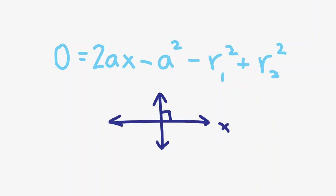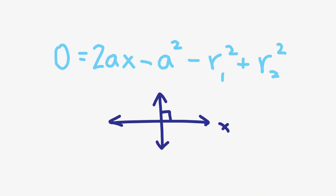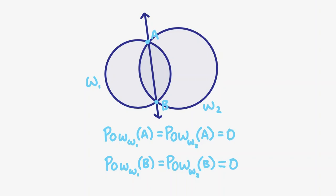As mentioned earlier, the radical axis passes through the circles' intersection points if they exist. This is the case because the intersection points have the same power with respect to the two circles. In particular, that power is zero. Thus, they must lie on the radical axis.